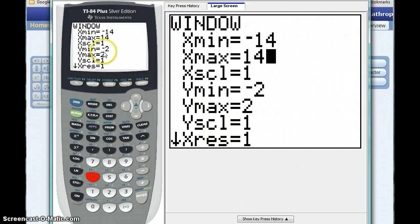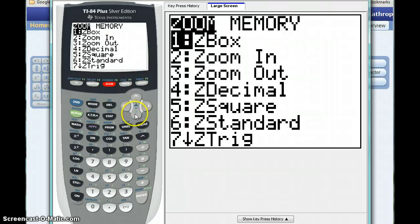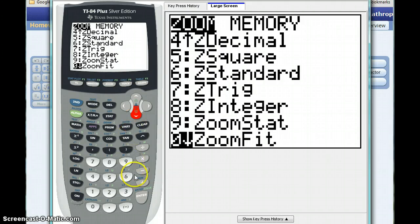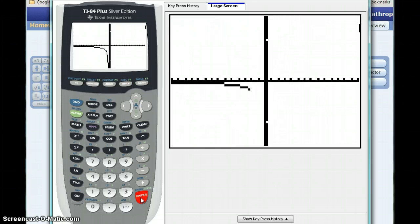Instead of setting the y min and y max values, what we'll do is select the zoom feature and scroll down that list until we find an option that says zoom fit, option 0 on my calculator. That zoom fit feature basically automatically adjusts the y axis based off the x values that we selected. Now we have a clear picture of what that graph should look like, and we can match it up with the graph that we're given.